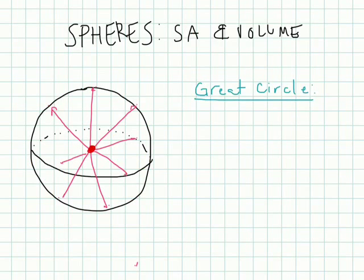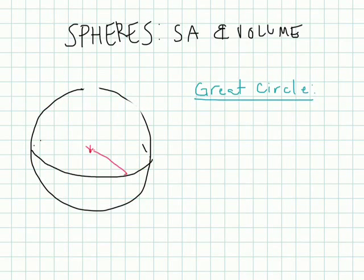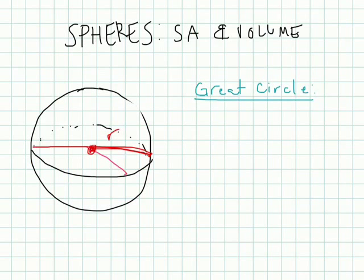A radius is going to be a segment that has one endpoint at the center and the other endpoint at the surface of the sphere. This is your radius, just like a circle — we're just talking about the center of the sphere now. The diameter would pass all the way through, but it needs to pass through the center of the sphere.